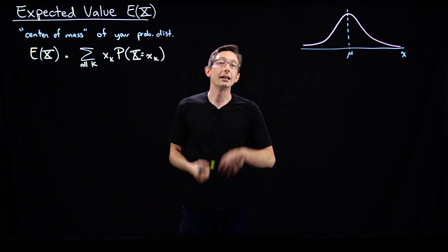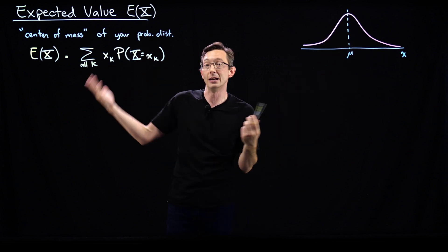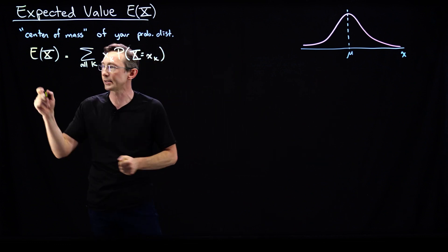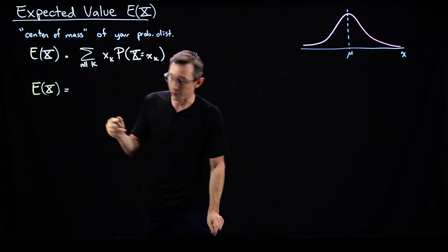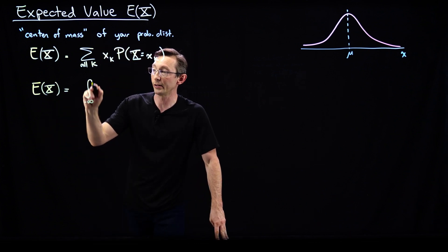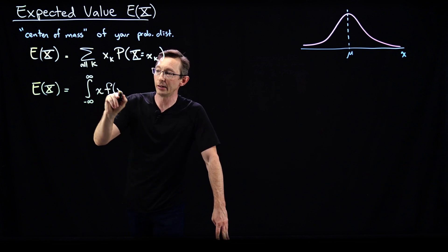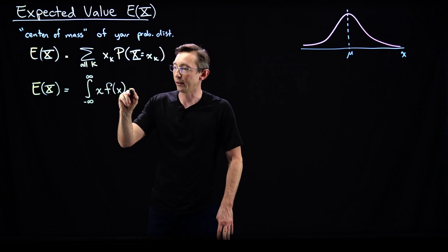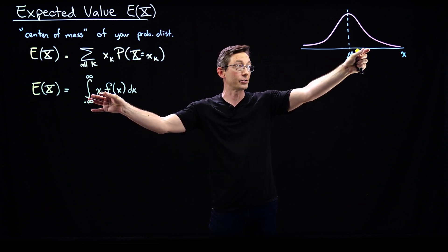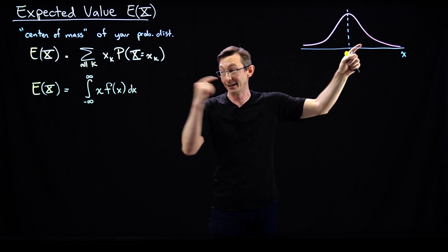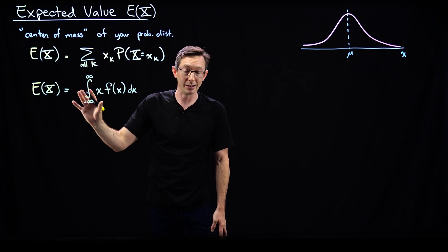I can also write this for continuous random variables, things like my Gaussian normal distribution, where x is a continuous variable. Now this is going to be an integral. The expected value of x is the integral over all possible values x can take — generically from minus infinity to infinity — of x times my probability density function f dx. Again, just a weighted average of every little x that I could possibly take in this distribution, times its probability, times dx.